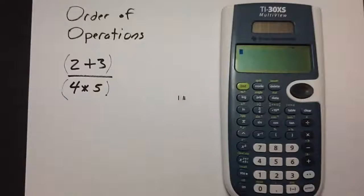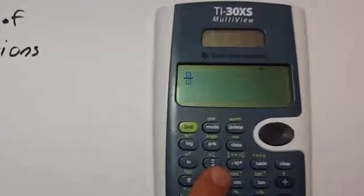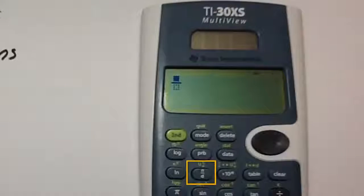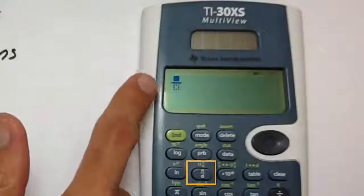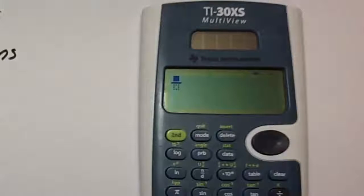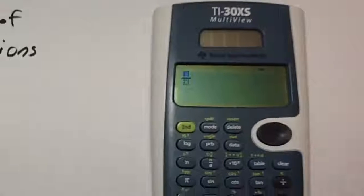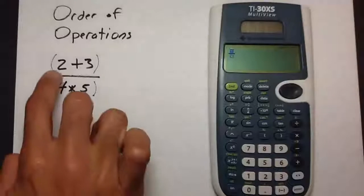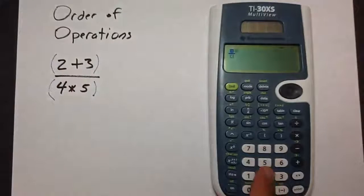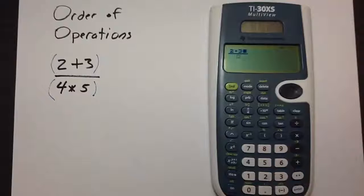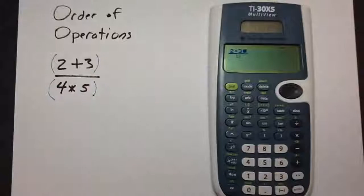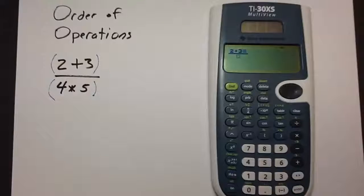Now we'll repeat this operation in the TI-30XS. This particular calculator does have a button that we can use. This button reading N over D. This places a box, a division bar, and then another box below it. The top box will be where we place the numerator. The numerator is 2 plus 3. So we'll place that on the top. You can enter parentheses around it. It won't hurt anything if you do. In this particular case, we don't really have to.